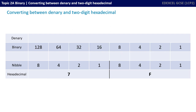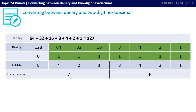Let's do one final example: 7F. Pause the video and see if you can work through this one, then unpause and check your answer. The left nibble is 7, so that's 4, 2, and 1 — giving us 7, with a 1 in each of those columns and a 0 in the 8. The right-hand nibble is a capital F, which is 15, so that's all ones: 8, 4, 2, and 1. Adding together all the columns with 1s in, we end up with 127.